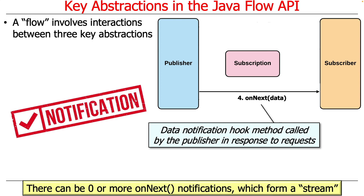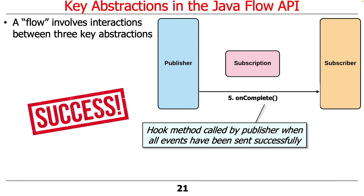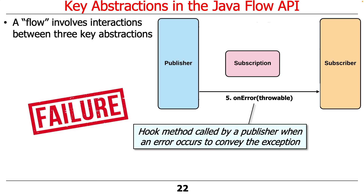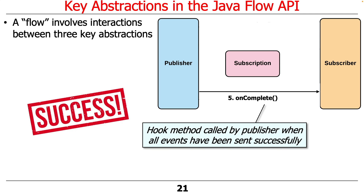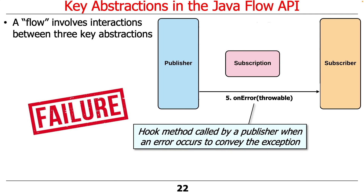A stream in reactive streams is a series of onNext calls. Once events start flowing, the publisher calls onNext to notify the subscriber as events occur — there can be zero or more of these. You can also have infinite streams. If a stopping point is reached, the publisher calls the onComplete hook method to inform the subscriber that all events have been sent successfully. If something goes wrong, the onError hook method is called, conveying the error as a Throwable. So onComplete is the success case and onError is the failure case.